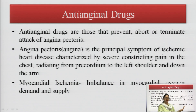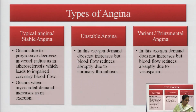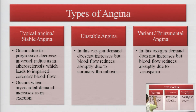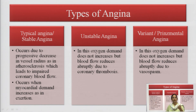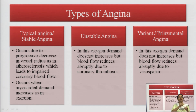So angina is a symptom of ischemic heart disease. The drugs used to treat angina are known as anti-anginal drugs. There are three types of angina: typical or stable angina, unstable angina, and variant or Prinzmetal angina. Typical and unstable angina are a result of atherosclerosis — the deposition of fat-like substances in the arteries and veins which causes hindrance to blood flow.